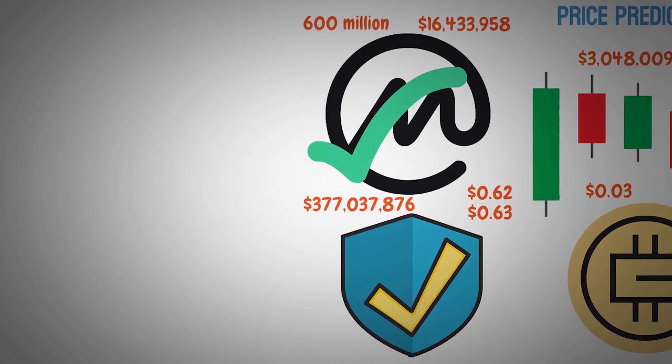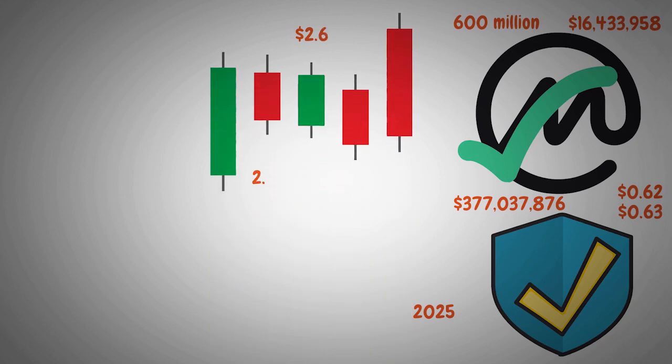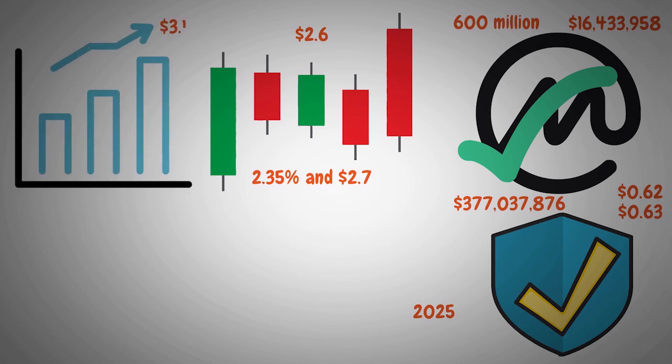GMT is predicted to start the year 2025 at an average price of $2.6 while trading between $2.35 and $2.7. By the mid of 2025, it will reach $3.1.